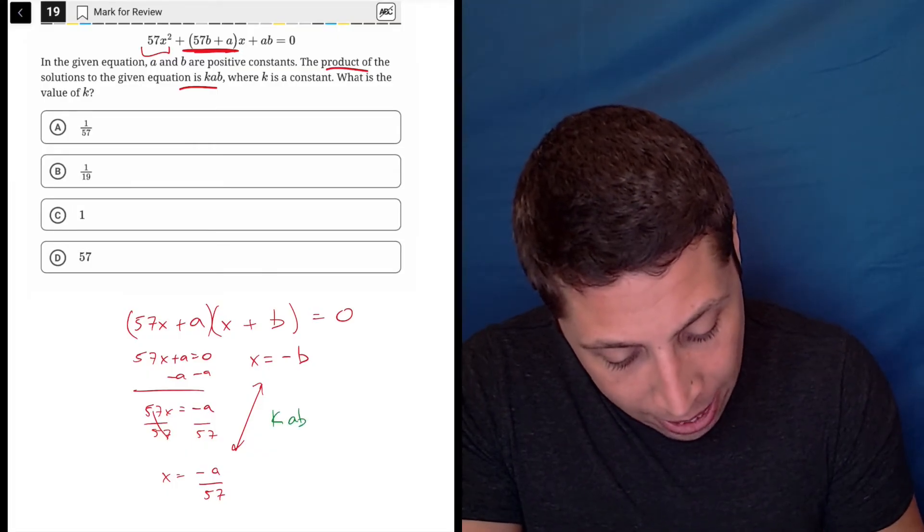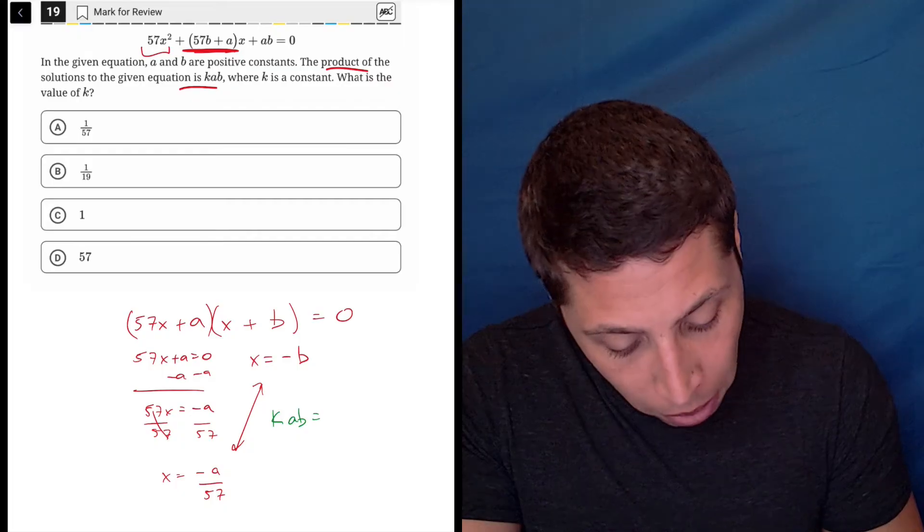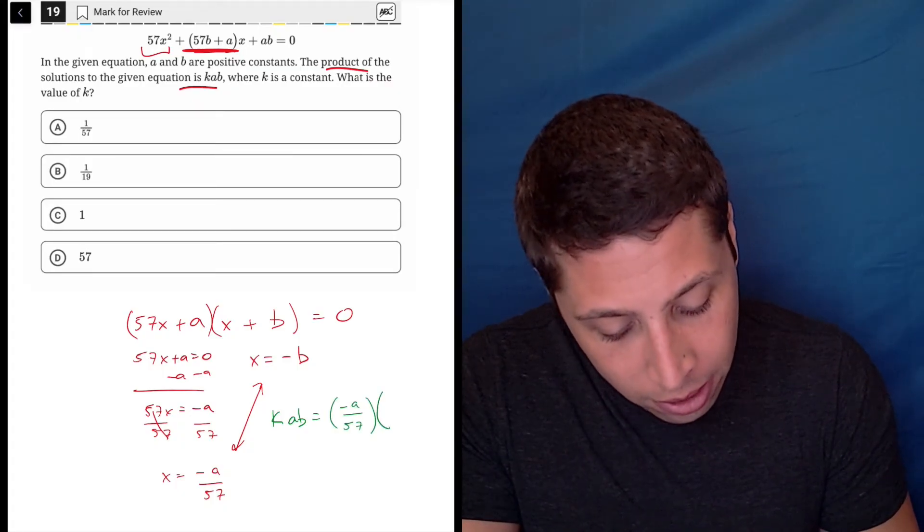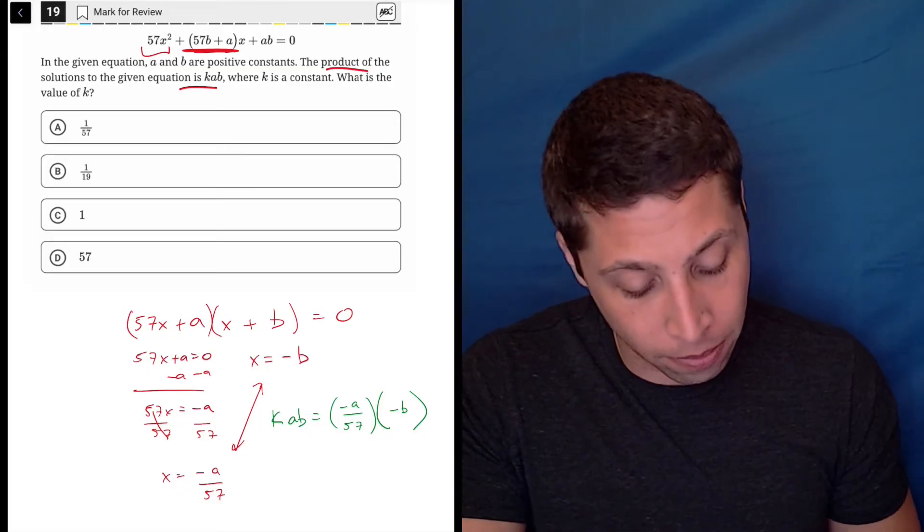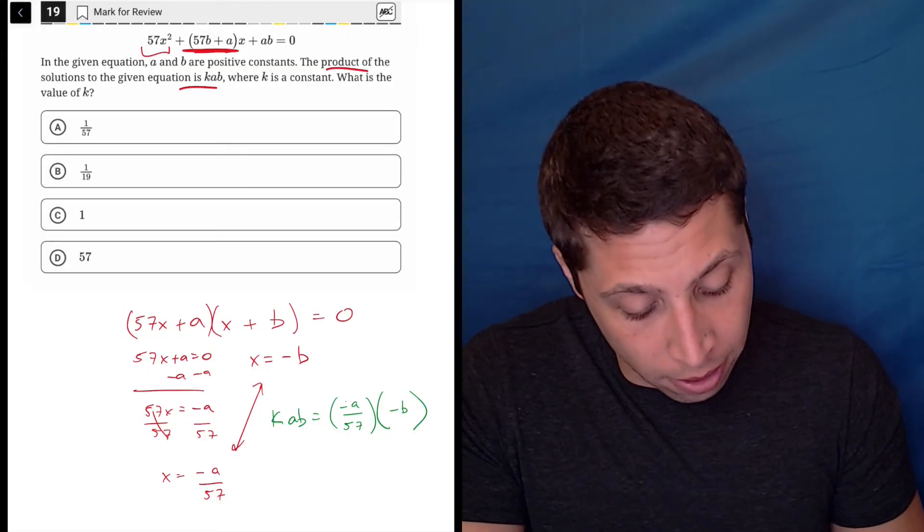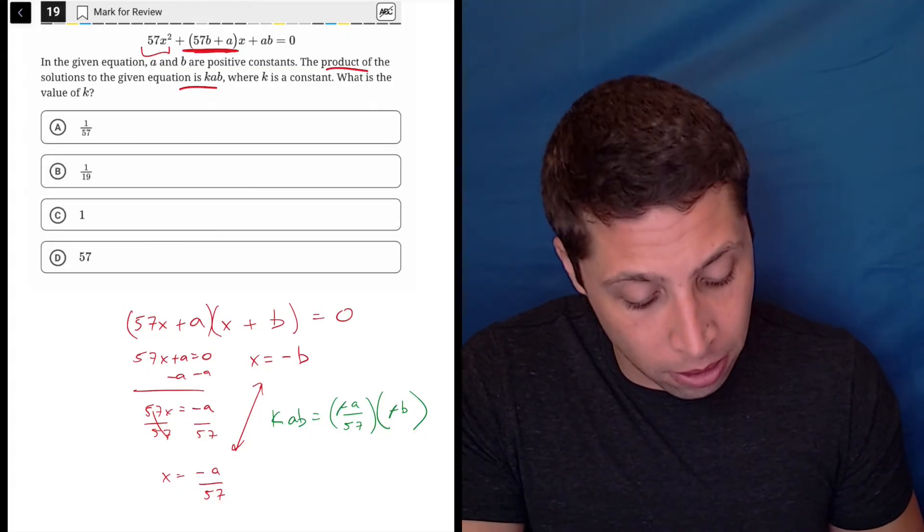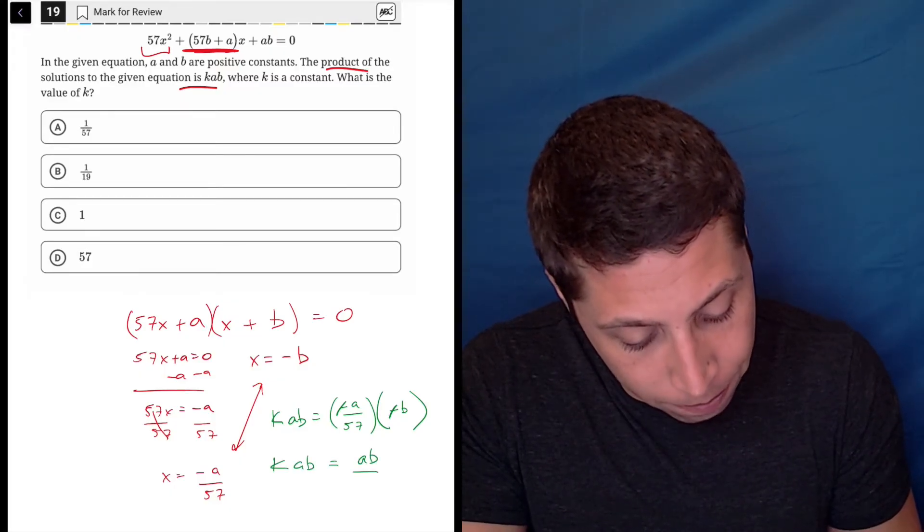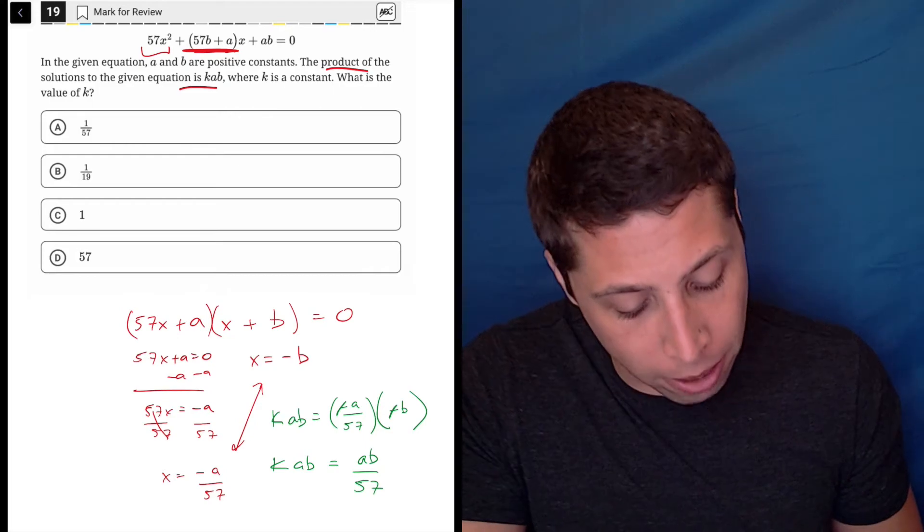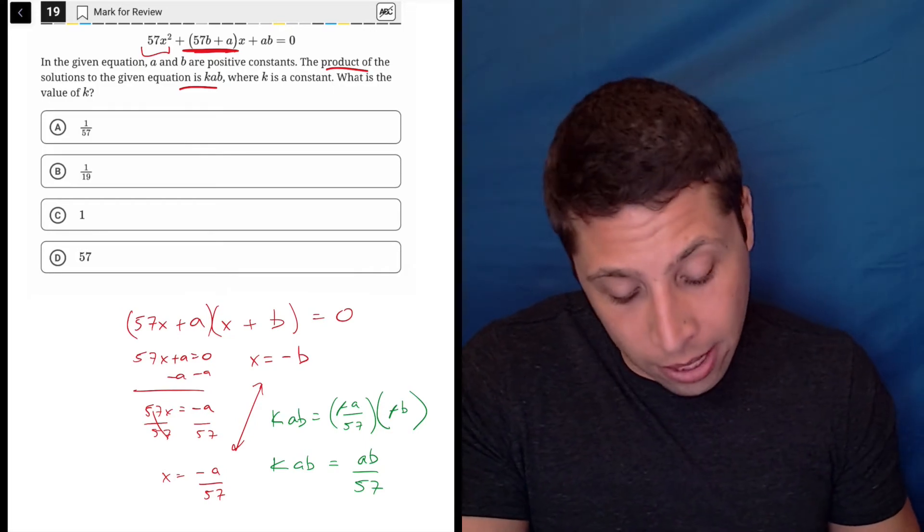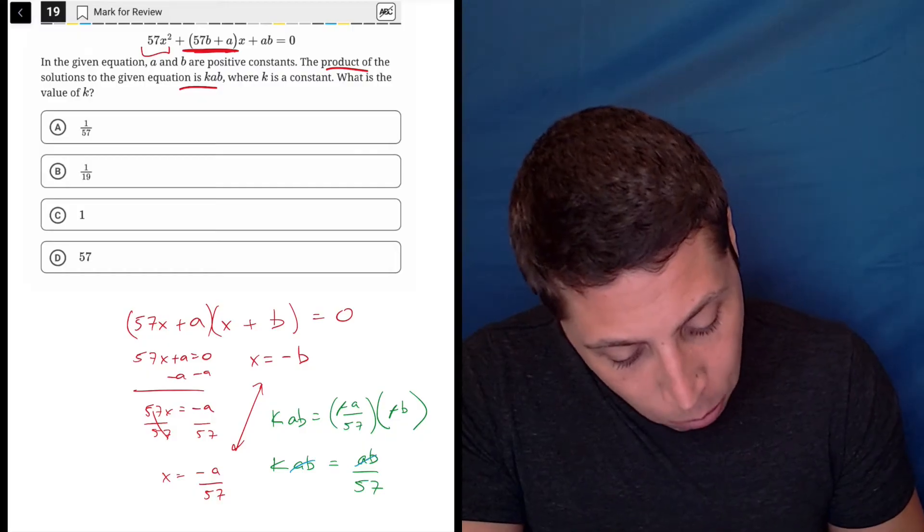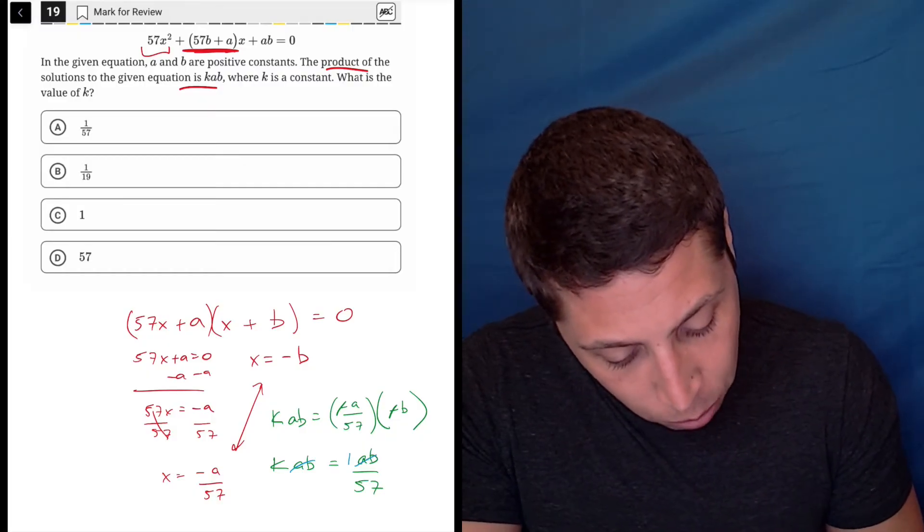So they're saying that kab is equal to the product. So that's negative a over 57 times negative b. So we can start simplifying. The negatives will cancel. And then we'll have the a times the b on the top and 57 on the bottom. So maybe you can see it. Maybe you have to do some more solving. But regardless, the kind of the a and the b don't really matter anymore, and this is a one. And so that's what k is.